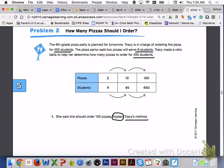Problem 2 on page 346 asks, how many pizzas should I order? The 6th grade pizza party is planned for tomorrow. Tracy is in charge of ordering the pizza for 450 students. The pizza parlor said 2 pizzas will serve 9 students. Tracy made a ratio table to help her determine how many pizzas to order for 450 students. Take a look at the ratio table here and please answer number 1 with your group members.